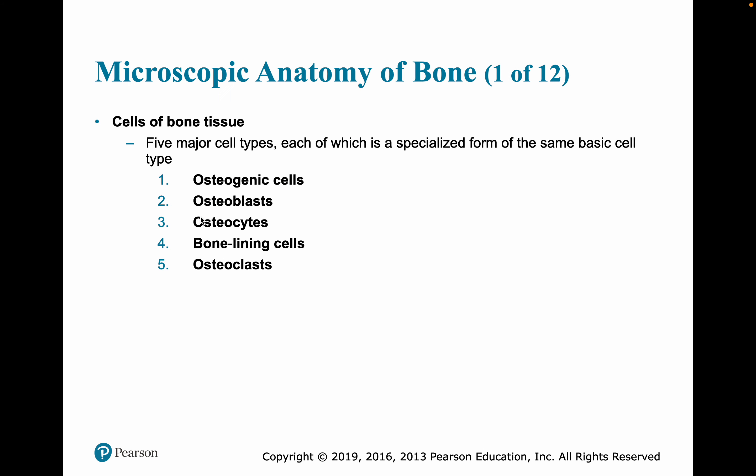Now let's look microscopically at the bone. Microscopically or histologically, there are five major cell types, each specialized to form the same basic cell type: osteogenic cells, osteoblasts, osteocytes, bone lining cells, and osteoclasts.